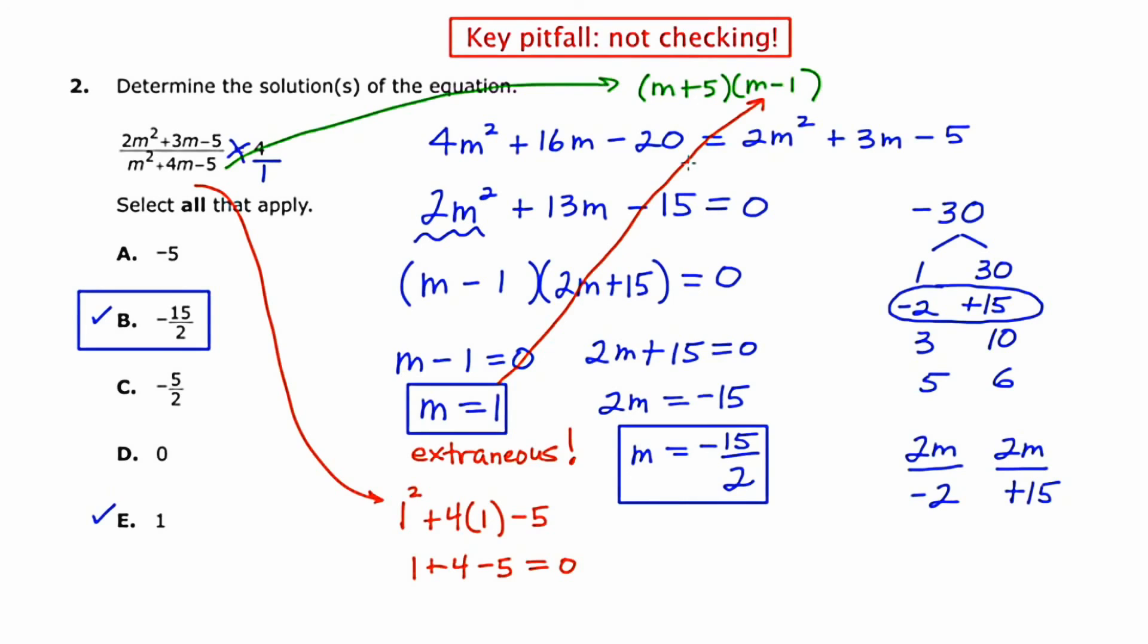m equals 1 does not work because it leaves you with zero in the denominator, which is an unsolvable situation.